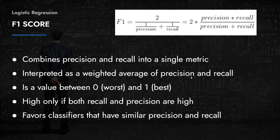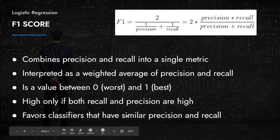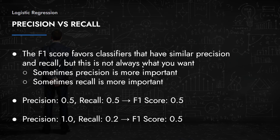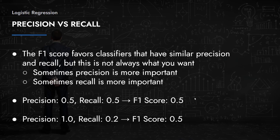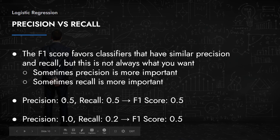The F1 score gives a value between 0 and 1, where 0 is a terrible model and 1 is the best. It will only be high if both recall and precision are high. It favors classifiers with similar precision and recall, which is not always what you want — sometimes precision matters more, sometimes recall matters more.